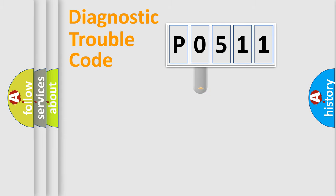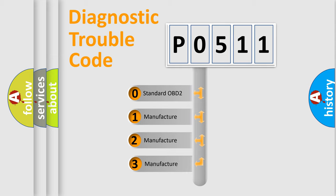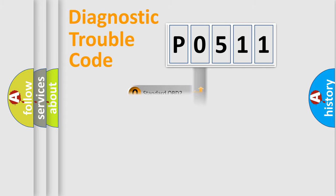This distribution is defined in the first character code. If the second character is expressed as zero, it is a standardized error. In the case of numbers 1, 2, or 3, it is a more specific expression of the car-specific error.